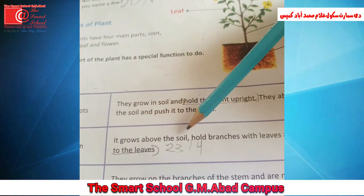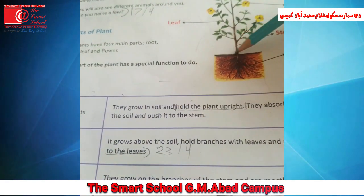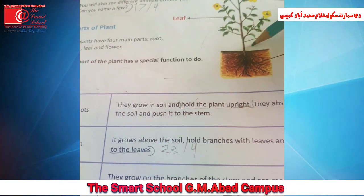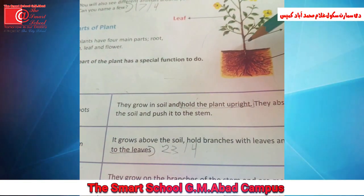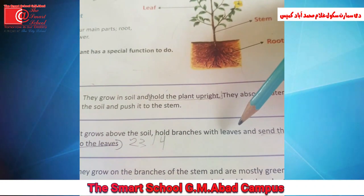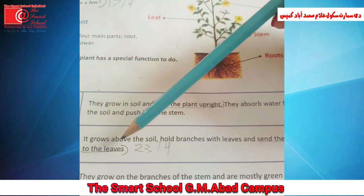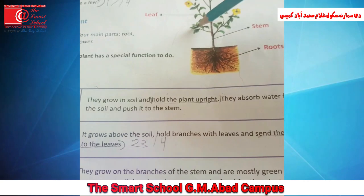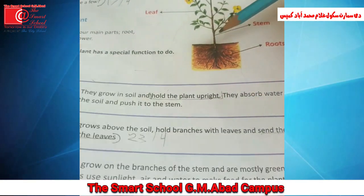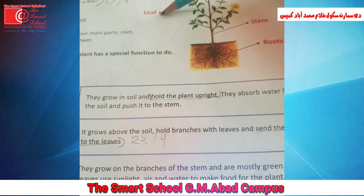It grows above the soil. جیسے کہ آپ دیکھ سکتے ہیں یہ زمین کے باہر ہے، یہاں تک ہماری زمین ہے۔ زمین کے باہر stem والا پارٹ شروع ہو گیا ہے، یہ زمین کے باہر grow کرتی ہیں۔ Hold branches with leaves and send the water to the leaves. اور جو پانی stem نے root سے لیا ہوتا ہے وہ leaf کی طرف move کر دیتی ہیں۔